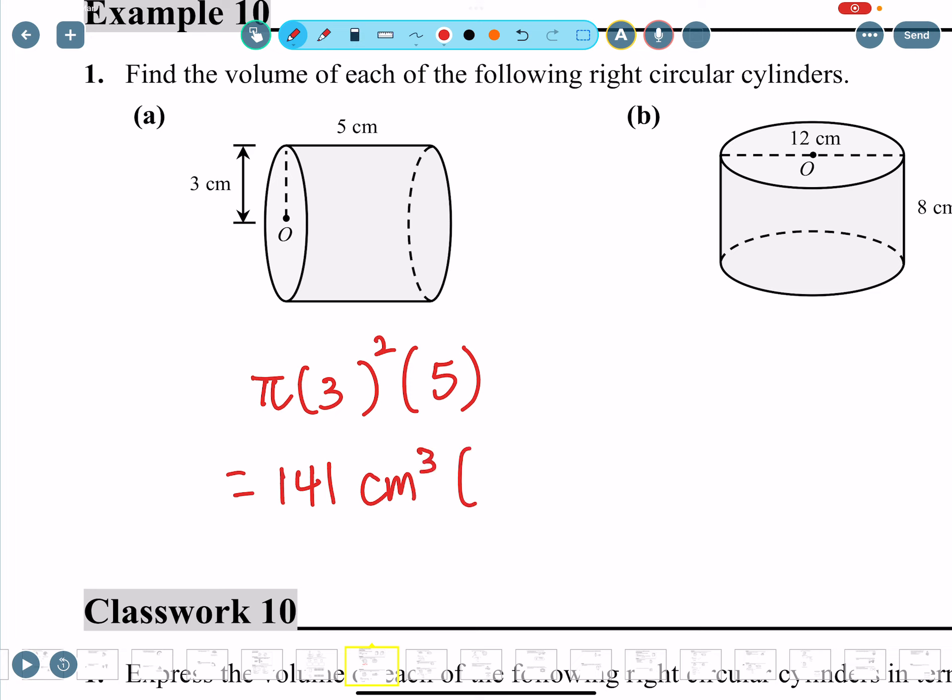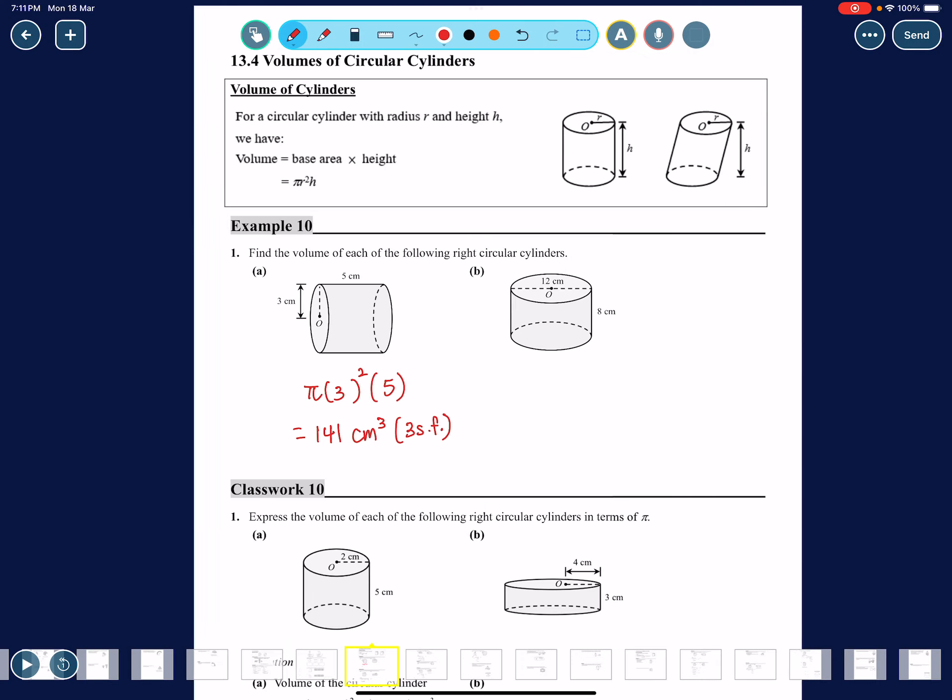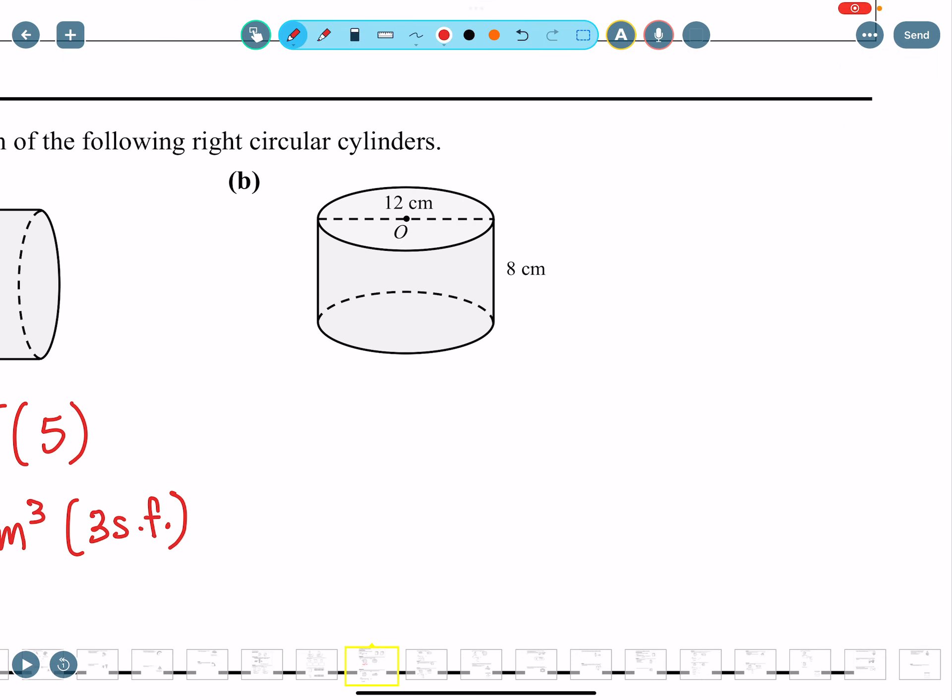Question B: again, volume is πr². Don't use the diameter; you have to change it to radius. If they give you a diameter which is 12 in this question, then 12 divided by 2 equals 6, right? Times 8, times the height. Calculate everything: π times 6 squared times 8 is 905 cm³.